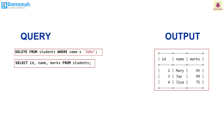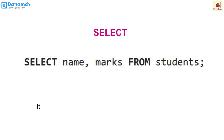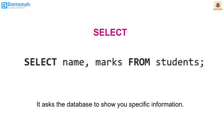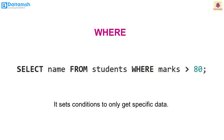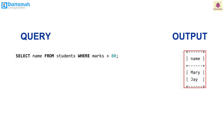DELETE: with the help of the SELECT query, we can see the output of the columns from the students table with John's record deleted. SELECT: it asks the database to show specific information. This query will show the name and marks of every student in the students table. WHERE: it sets conditions to only get specific data. This query shows names of all students who have marks greater than 80.